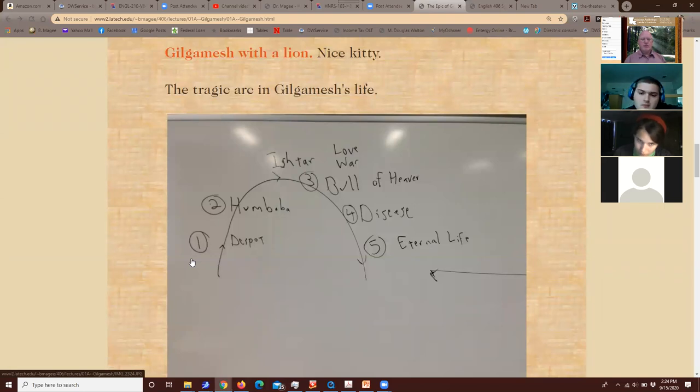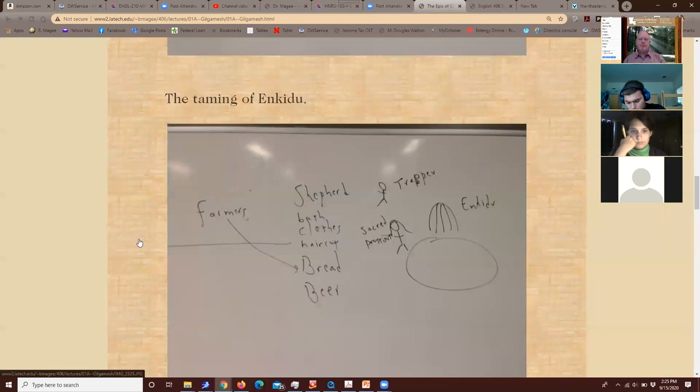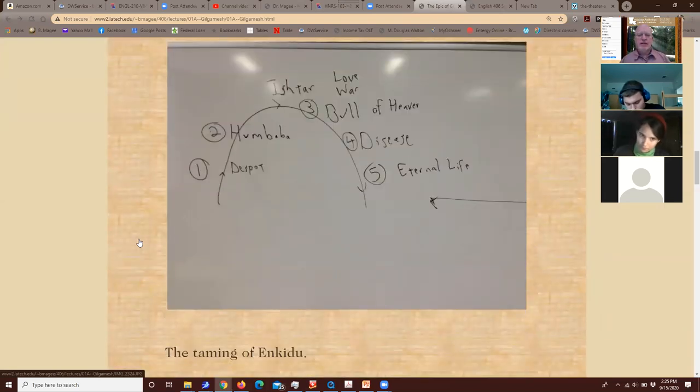With Gilgamesh, we find that he goes through kind of a rise and fall over the course of his life. This is a tragedy which ends in his death. The story of Gilgamesh is much shorter than Greek tragedies. At the beginning, we see Gilgamesh. He's two-thirds God, one-third man.